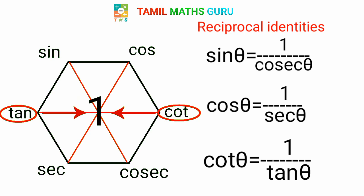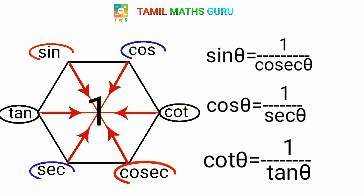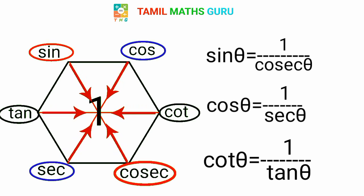Cosecθ reciprocal is 1 by sinθ. Secθ is 1 by cosθ. Tanθ is 1 by cotθ.